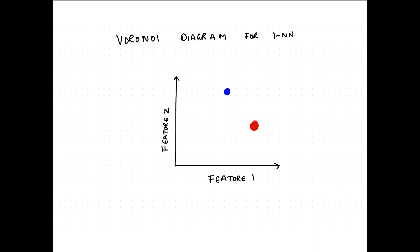Before talking about K-Nearest Neighbors and what K means, let's talk about one nearest neighbor, which is the simplest form. We'll perform 1-NN classification on a trivial dataset containing only two points and two features. We want to learn a classifier for this and predict on any test point in this space. The intuition we already have is exactly what we'll do here — by creating a Voronoi diagram.